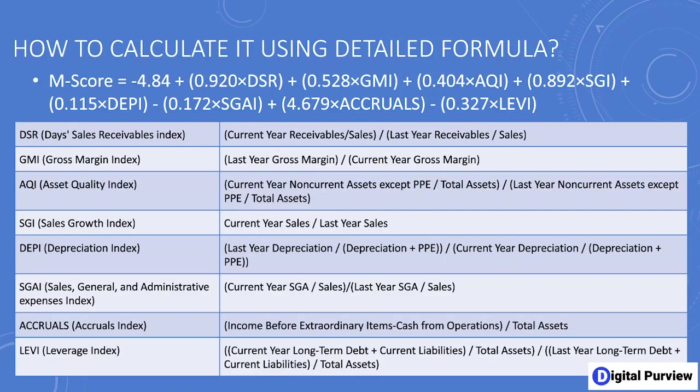The seventh variable is the Accruals Index — how much accruals are increasing or decreasing. The eighth is the Leverage Index, representing how much debt or loans the company has taken. If the company is highly leveraged and there is an indication they may not meet their debt commitments, it might incentivize them to hide problems in the financial statements.